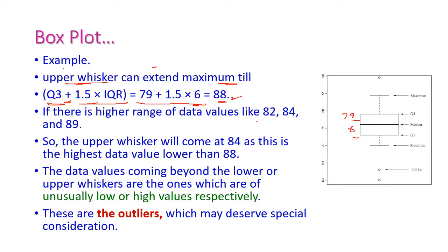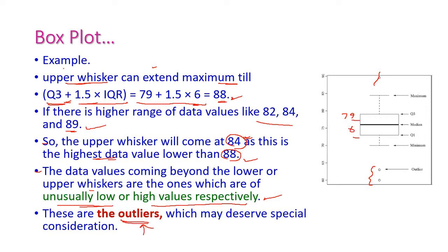If the highest range data values are 82, 84, and 89, the upper whisker will come at 84, because 84 is the next data value lower than 88. The data values that fall beyond the lower or upper whiskers are unusually low or high values respectively.